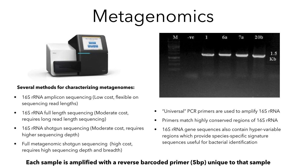16S amplicon sequencing is a recently developed technique that is widely used to study the microbiome directly in its environment. Such metagenomic sequencing focuses on 16S or 18S ribosomal RNA that has to be first amplified with PCR amplification. The 16S gene sequences contain hypervariable regions that provide species-specific signature sequences useful for bacterial identification.